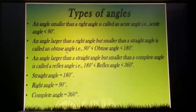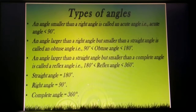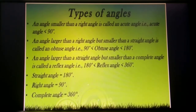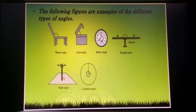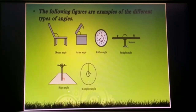An angle larger than a straight angle is called a reflex angle. Straight angle is 180 degrees, right angle is 90 degrees, and complete angle is 360 degrees. These are some examples of different types of angles: obtuse angle, acute angle, reflex angle, and straight angle.